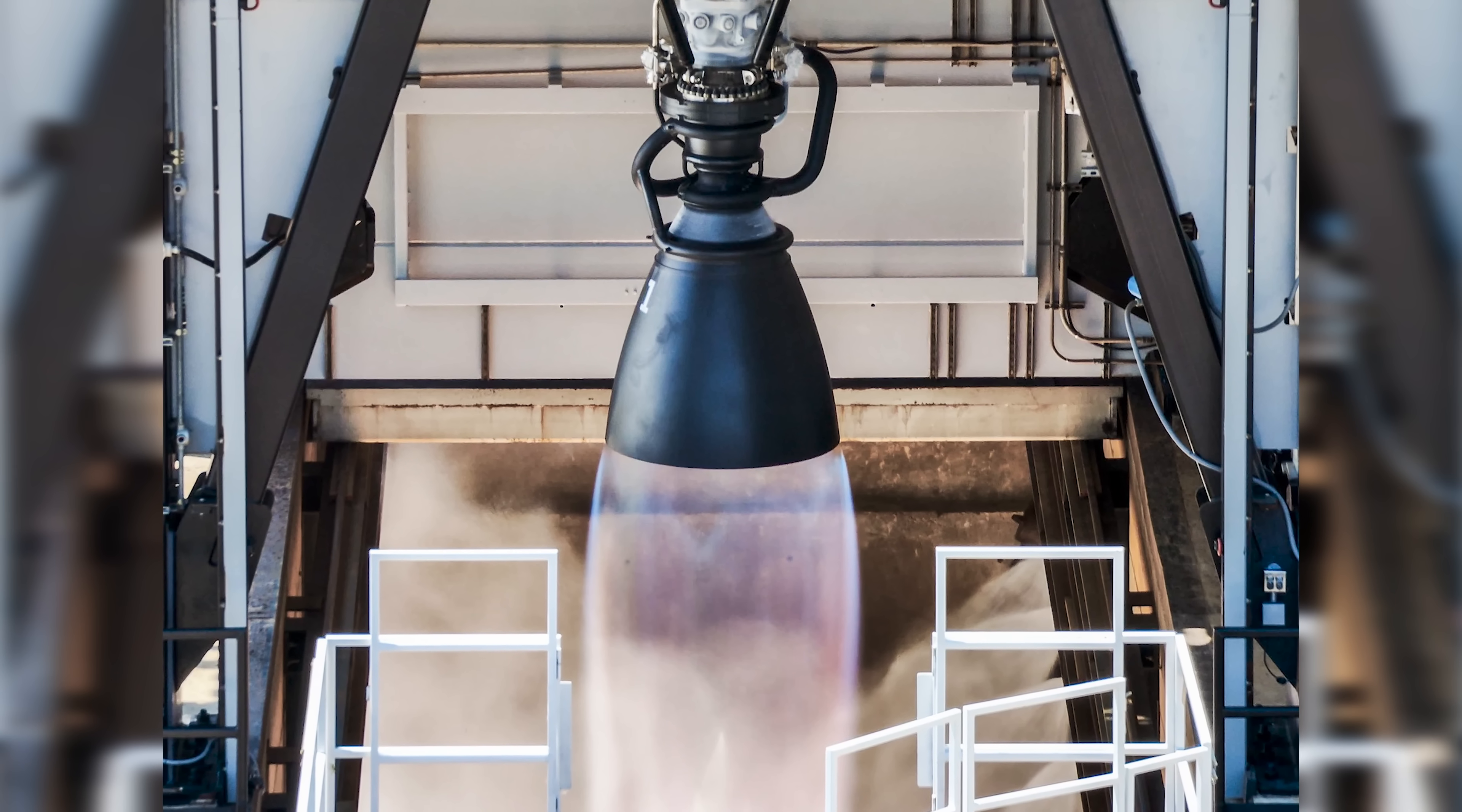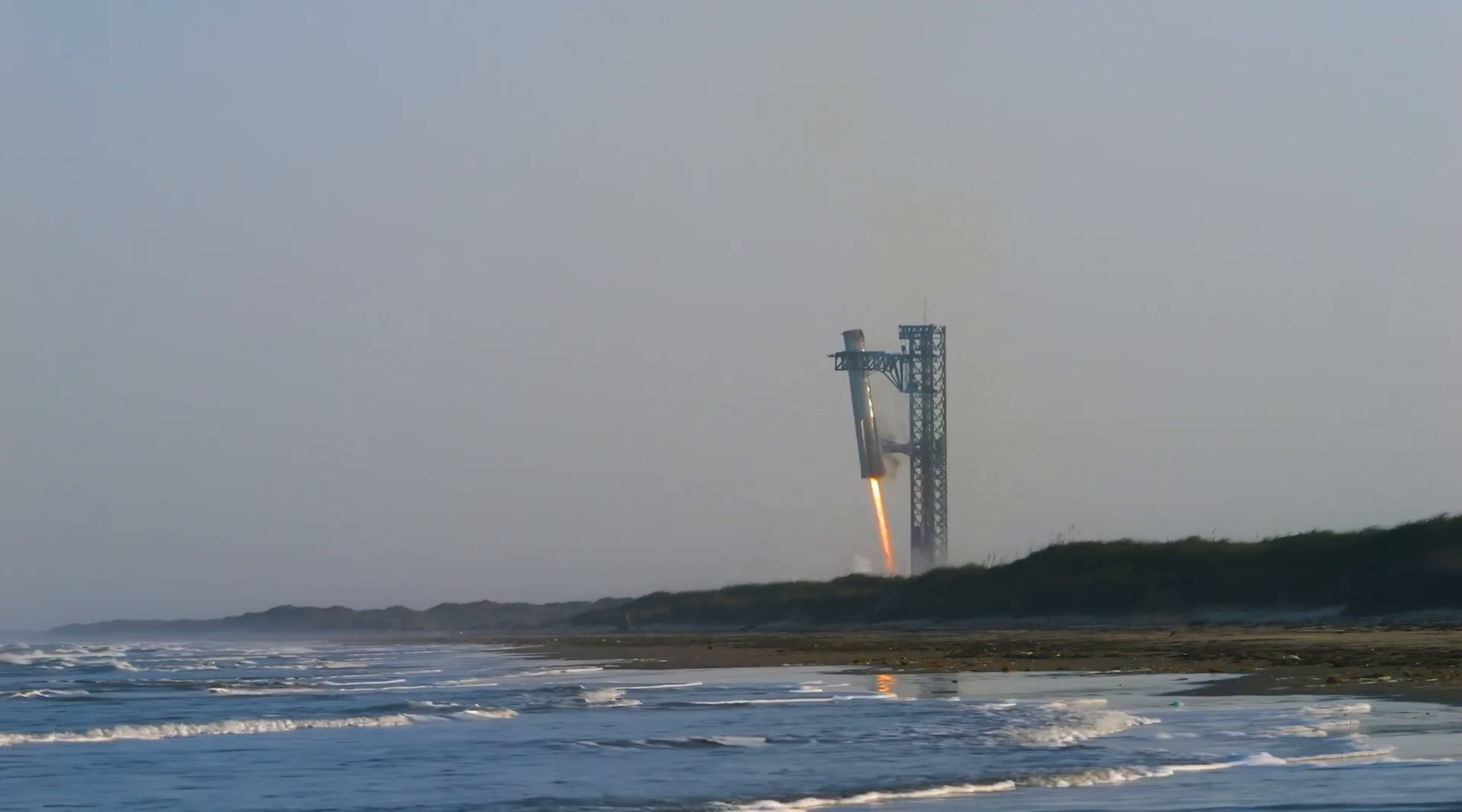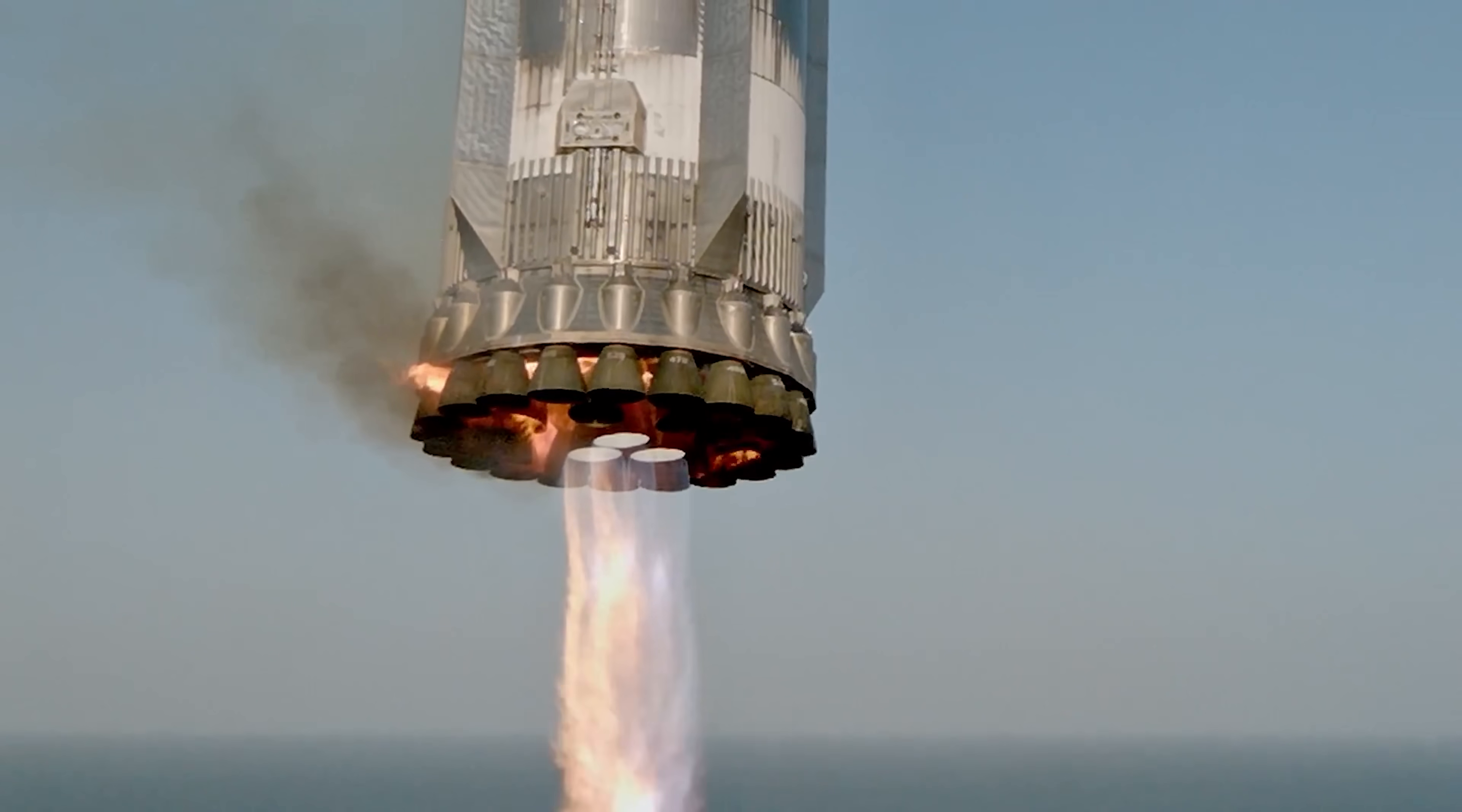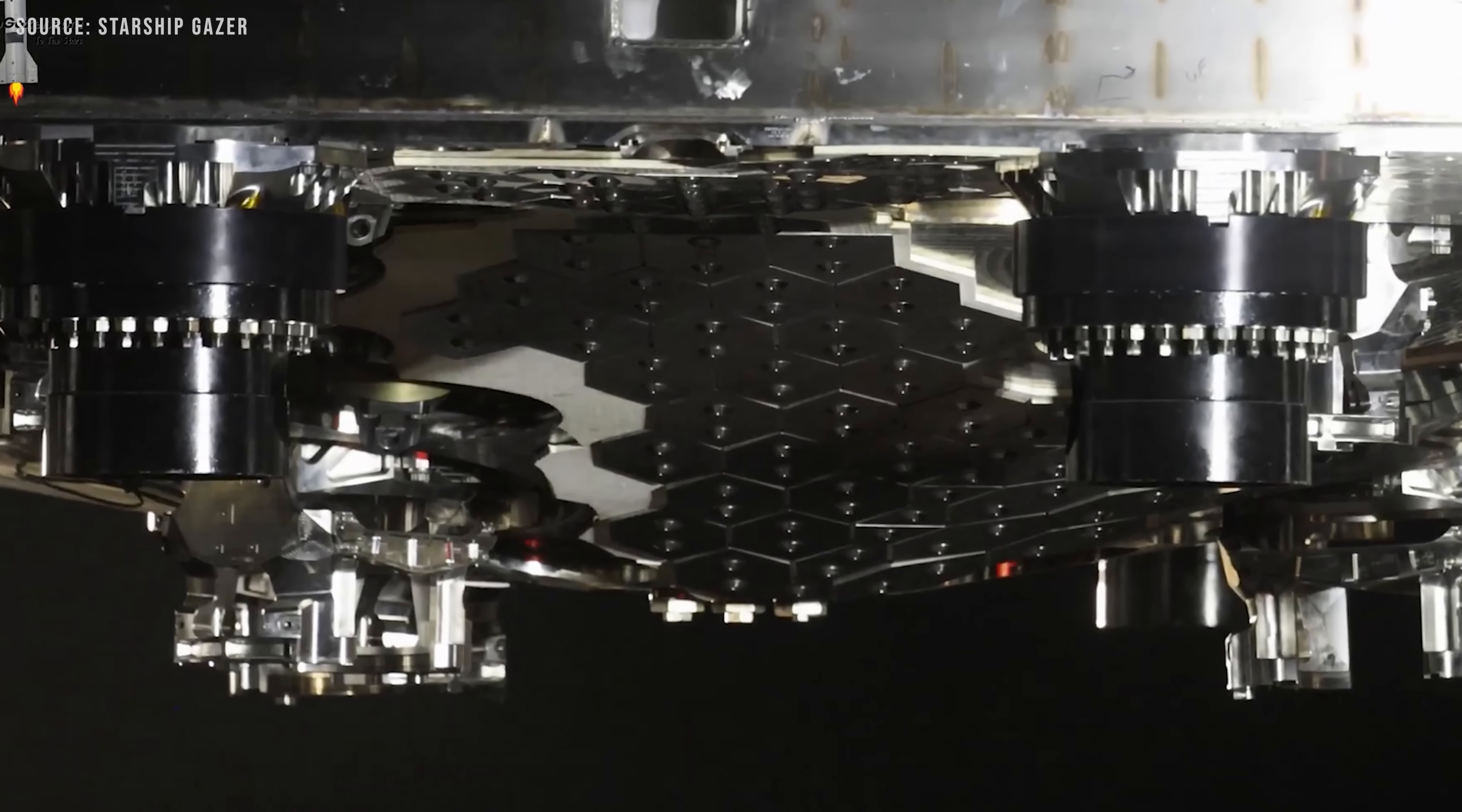Elon also said this design would help reduce leaks. However, because the engines are now directly exposed to hot plasma during descent, any secondary structures or components that could burn off mid-flight must be eliminated. To handle this, the engine bay of the Super Heavy Booster is expected to be fitted with a new type of metallic heat shield. This is supported by images of Test Tank 17 seen at Starbase, which show several hexagonal metal heat shield tiles installed on the aft end of the tank.